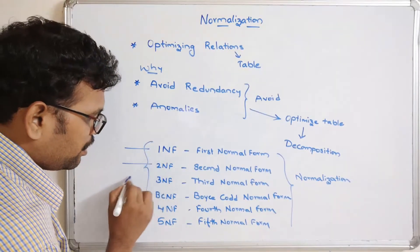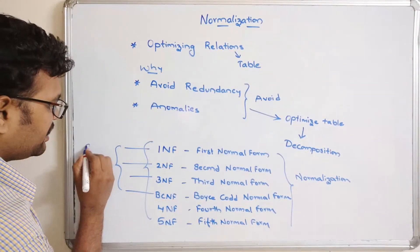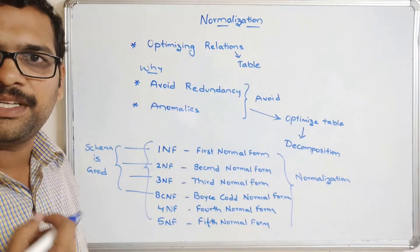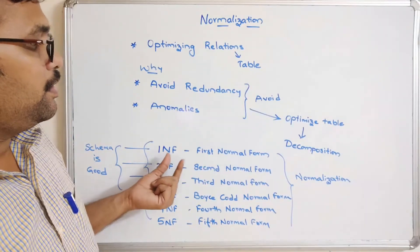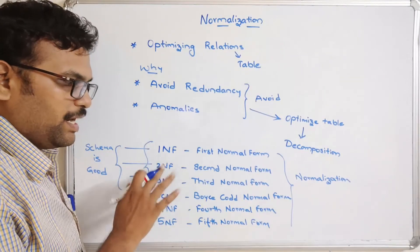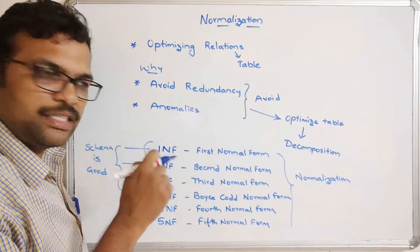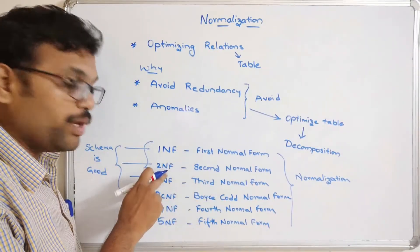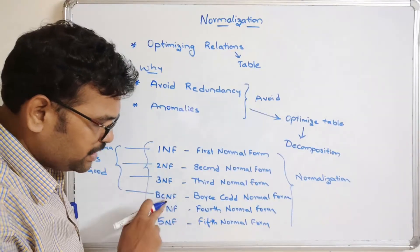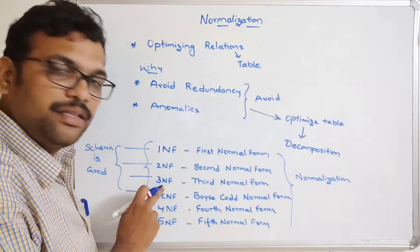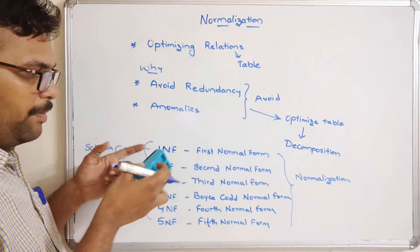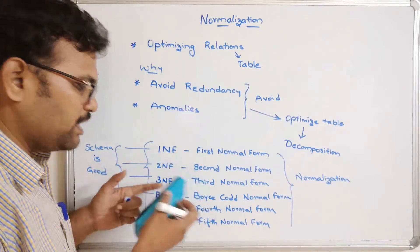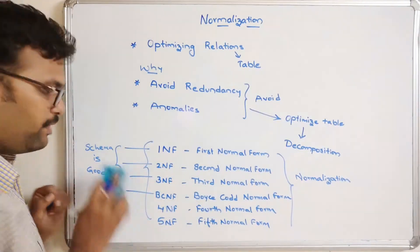If you want to check whether a relation is in 2NF, it must first be in 1NF. To check for 3NF, the relation must satisfy 2NF. If the relation is in BCNF, that implies it satisfies 3NF. So there is a clear hierarchy: 1NF, 2NF, 3NF, BCNF, 4NF, and 5NF. If a schema satisfies up to BCNF, we can say the database is a good design.